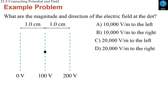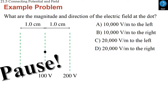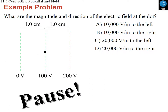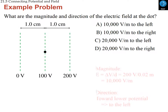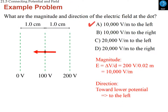Another problem: find the magnitude and direction of the electric field at a given point. The field points to the left because it goes from high voltage to low voltage. The magnitude is 200 volts divided by 2 centimeters (0.02 m), which equals 10,000 volts per meter.